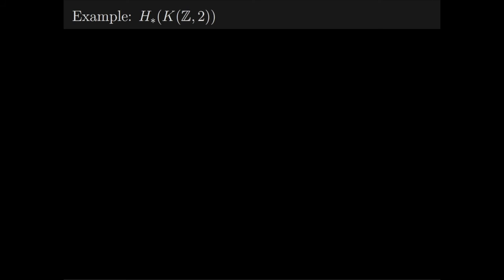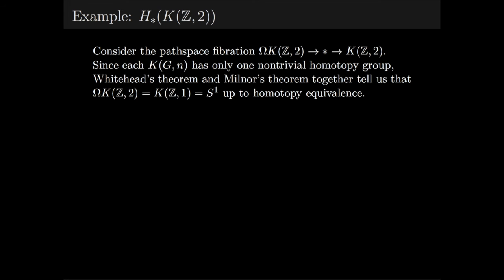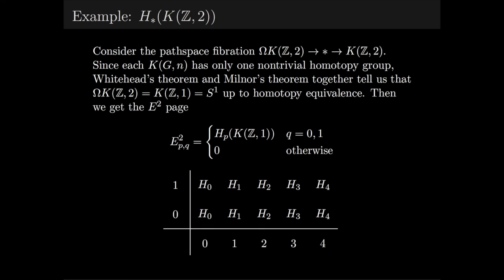For another example, consider the path space fibration from the loop space of K(Z,2) to star to K(Z,2). Here K(Z,2) denotes the Eilenberg-MacLane space with homotopy group Z in dimension 2. Since each K(G,N) has only one non-trivial homotopy group, it's not too hard to show that Whitehead's theorem and Milnor's theorem together tell us that the loop space of K(Z,2) is K(Z,1), which is S¹, up to homotopy equivalence.